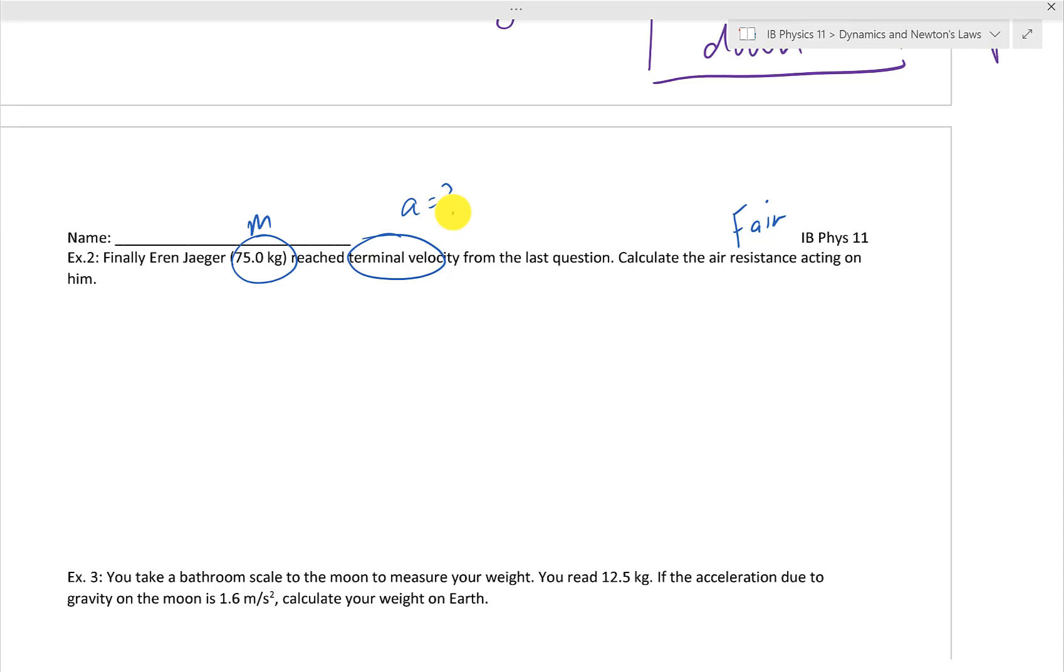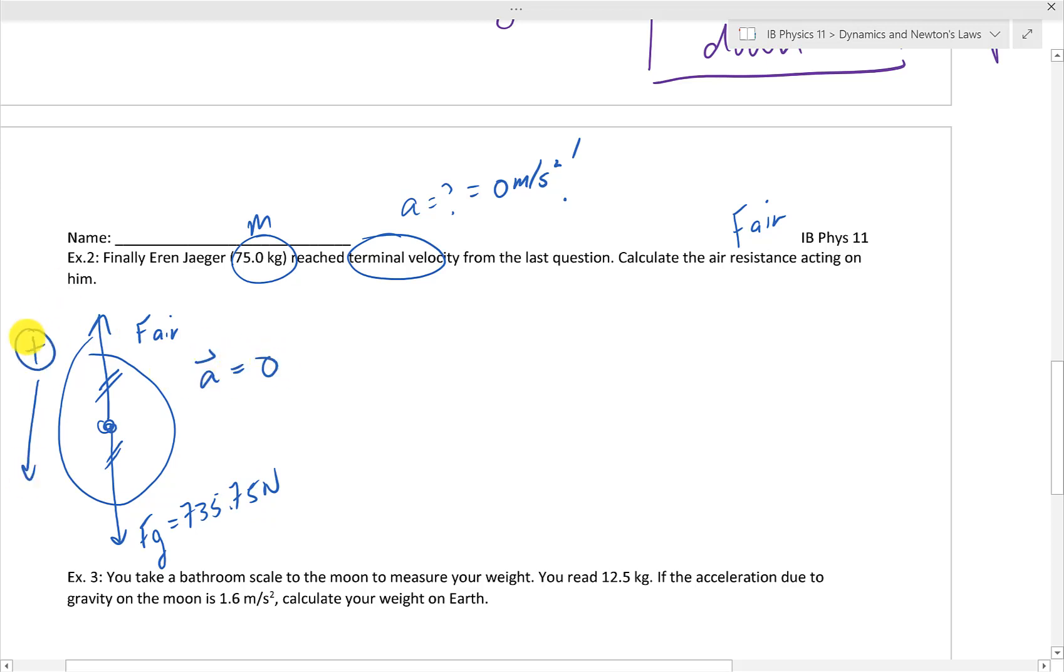At terminal velocity, the acceleration is going to be zero. So if we draw a free body diagram, the Fg is going to be equal in magnitude to the air resistance, but opposite in direction. So if we write this all down, our Fnet is going to be zero because acceleration is zero.